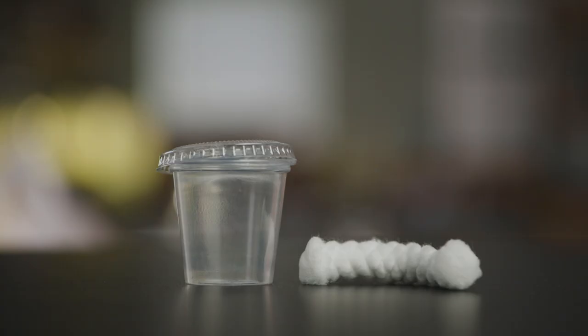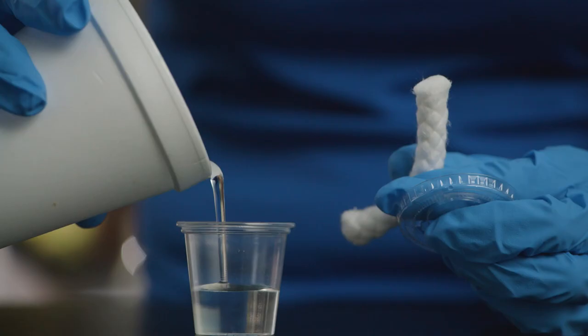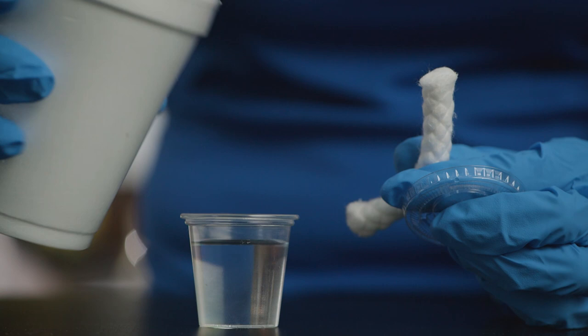Carolina's milkweed bug kits come with a water container and wick to provide water without the risk of drowning. Fill the bottom of the container with water. Pull the wick through the lid and place the lid on the container.